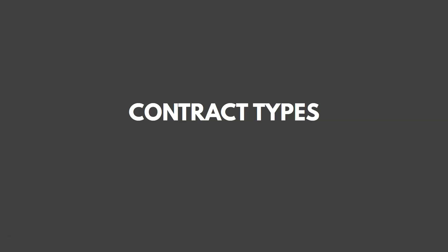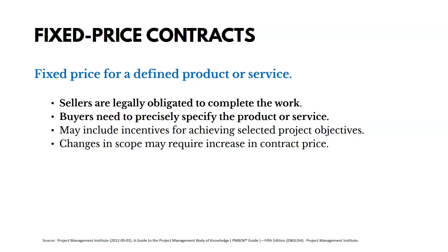Now let's talk about contract types. There are three key contract types: fixed price, cost reimbursable, and time and materials, each with a few different flavors. Fixed price contracts set a fixed price for a defined product or service. Sellers are legally obligated to complete the work, and buyers need to precisely specify what they're looking for. If there's a change in scope, it may require an increase in contract price, because it's fixed price for fixed scope.